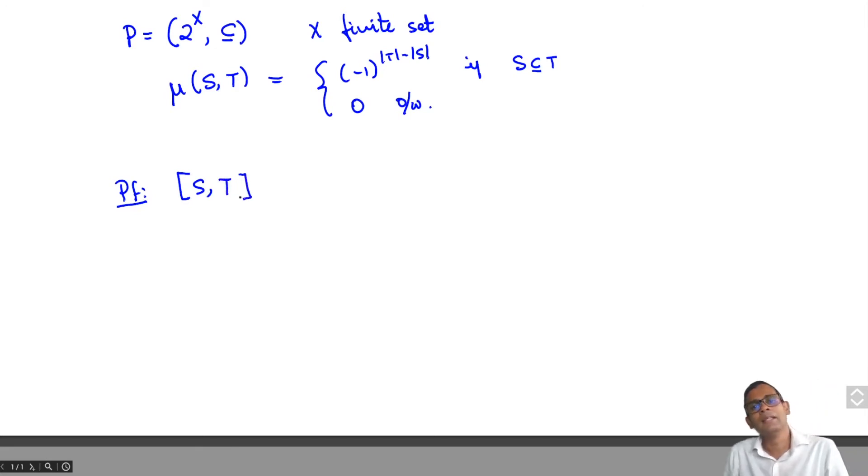This consists of all the subsets that contain s and are contained in t. So if you just remove s from each of those subsets, this is isomorphic to the poset, the interval from empty set to t minus s.